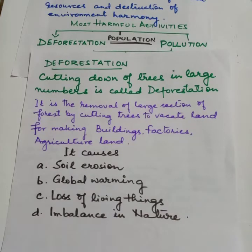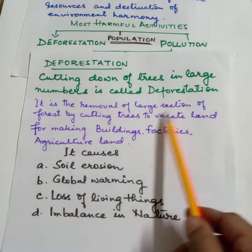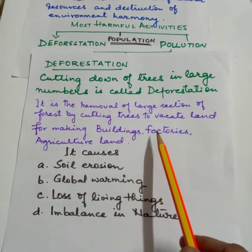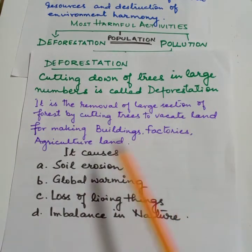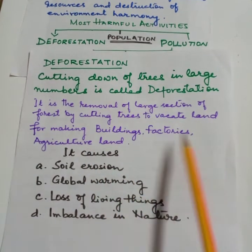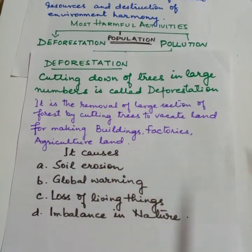Deforestation is cutting down of trees in large numbers. It is the removal of large sections of forest by cutting trees to vacate land for making buildings, factories, and agricultural land.